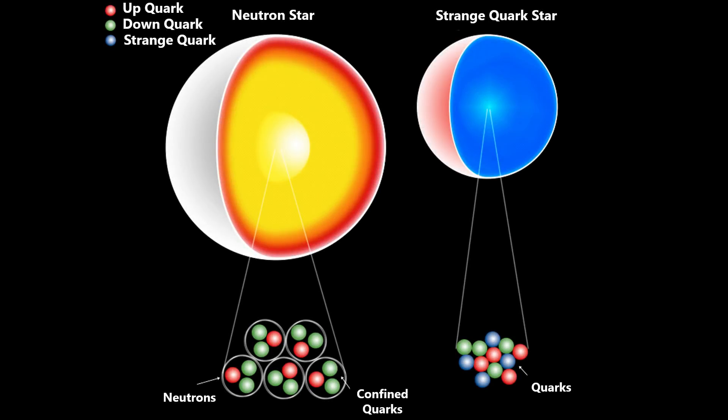As I've said, a neutron star is made up mostly of one of the constituents of an atom, neutrons. But what are neutrons made of? That would be quarks. So it would make sense that a star that is even more dense than a neutron star would be made of the constituents of neutrons,